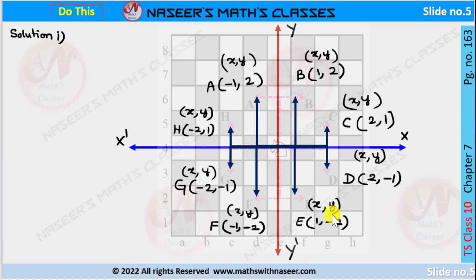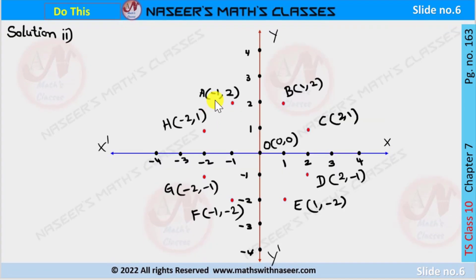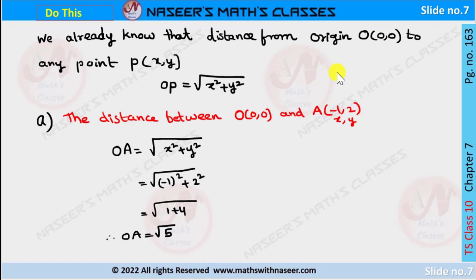These are the coordinates of points A, B, C, D, E, F, G, H according to the moves of the horse: A = (−1, 2), B = (1, 2), C = (2, 1), D = (2, −1), E = (1, −2), F = (−1, −2), G = (−2, −1), H = (−2, 1). The origin O is (0, 0). Now we have to find the distance between the origin and the other points A, B, C, D, E, F, G, H. The distance from the origin to any point P(x, y) is OP = √(x² + y²).